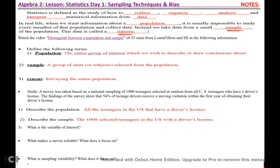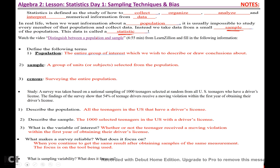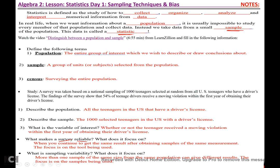The sample was 1,000 selected teenagers in the United States with a driver's license. The variable of interest is whether or not the teenager received a moving violation within the first year. A survey is reliable when you continue to get the same result after obtaining samples of the same measurement — the focus is on the tool being used. Sampling variability means more than one sample of the same size from the same population can give different results — the focus is on the samples being used.